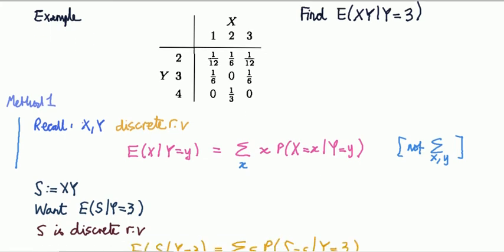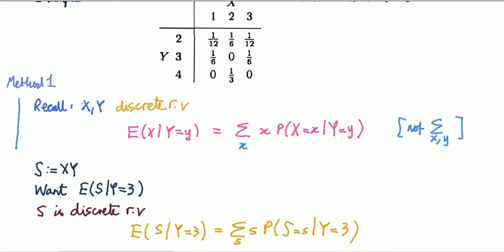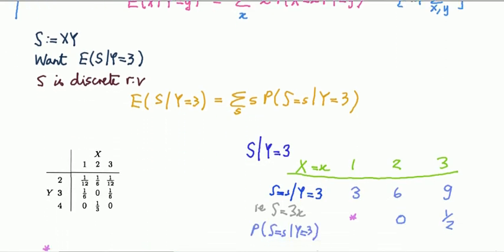We'll use two methods. Method one is the direct method, using the definition of conditional expectations. For two discrete random variables, the conditional expectation is defined by summing over outcomes of X — not both random variables — because Y is fixed. Let's call the product XY by the name S.